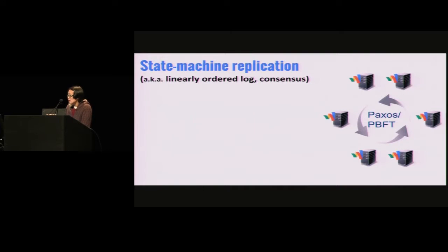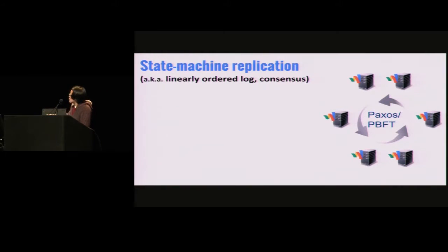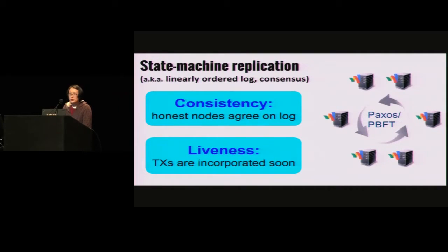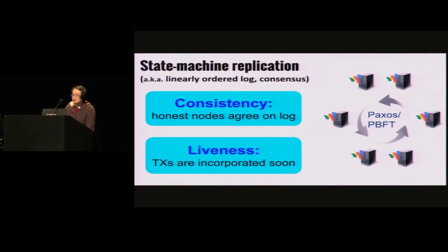State machine replication is also known as a linearly ordered log or consensus. Let's consider a typical scenario. Suppose we have Google Wallet, a mission-critical application, and suppose they want to replicate their servers. If you put your money in Google Wallet, you don't want to lose the money if the server goes down. All of these servers want to agree on a linearly ordered log of transactions, and there are two important security properties: consistency and liveness. Consistency says that the honest nodes must agree on what the log is, and liveness says that if a client submits a transaction, it should appear in all the servers' logs very quickly.